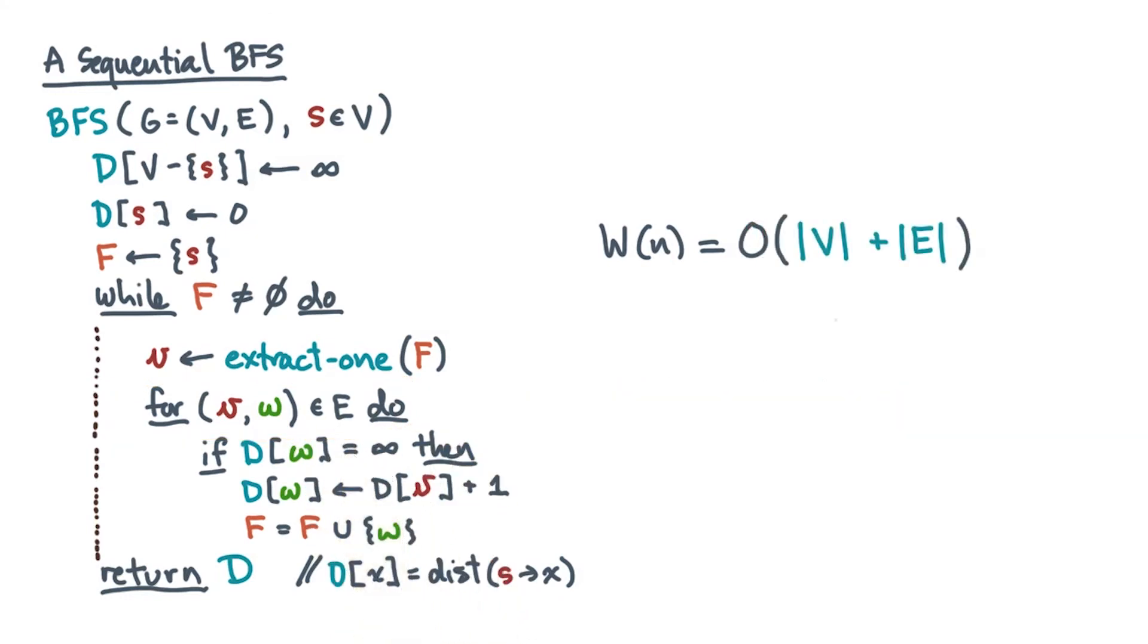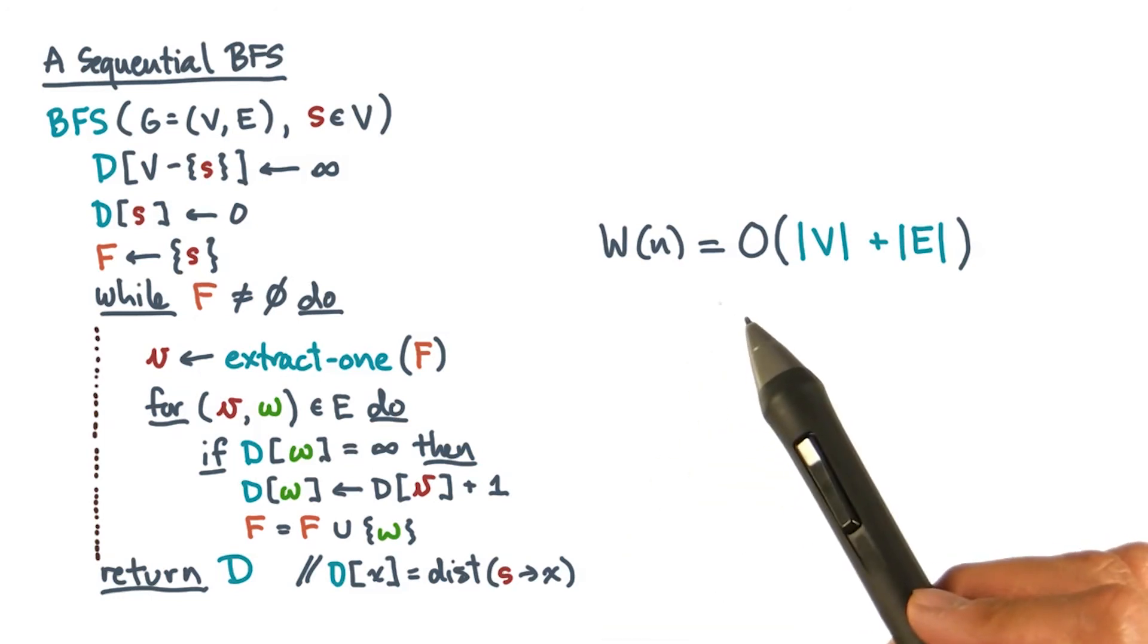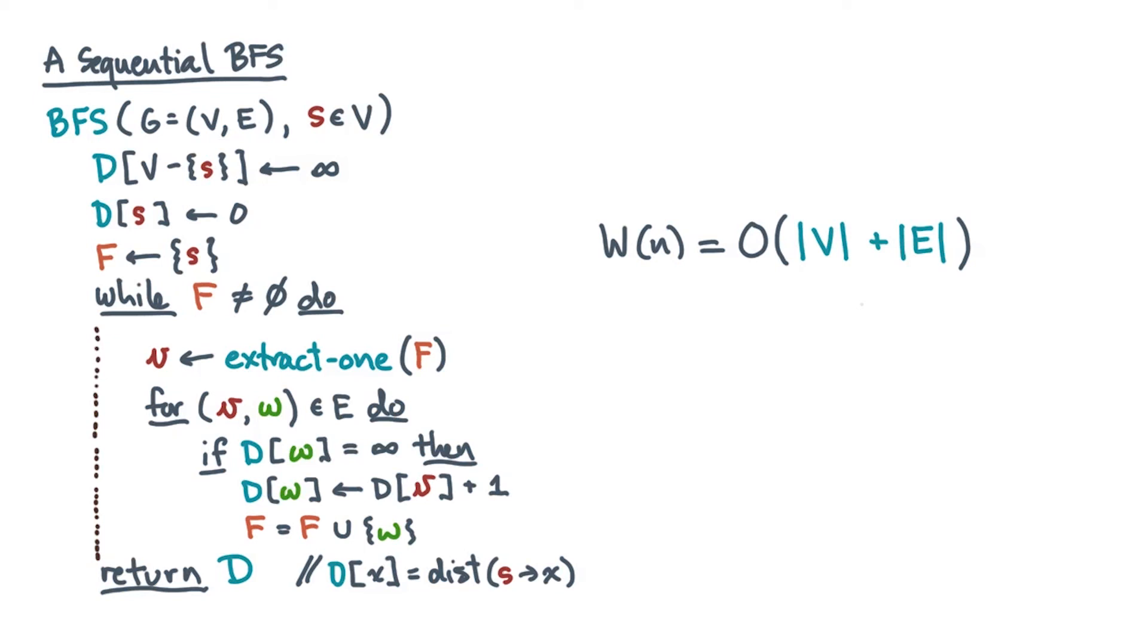In other words, the total cost of the algorithm is big O of the size of V plus the size of E. Again, if you trace through the algorithm yourself on a sample graph, you'll see how this happens.